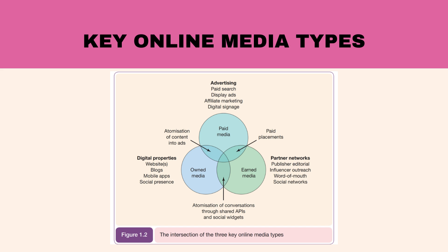Two: owned media. This is media owned by the brand. Online, this includes a company's own websites, blogs, email list, mobile apps or their social presence on Facebook, LinkedIn or Twitter. Offline, owned media may include brochures or retail stores. It's useful to think of a company's own presence as media in the sense that they are an alternative investment to other media, and they offer opportunities to promote products using similar ad or editorial formats to other media. This emphasizes the need for all organizations to become multi-channel publishers.